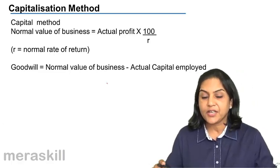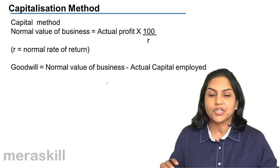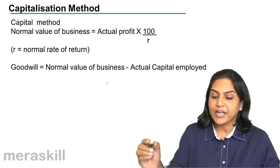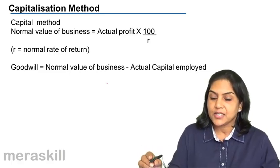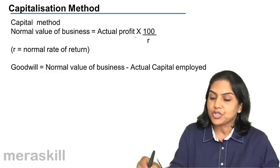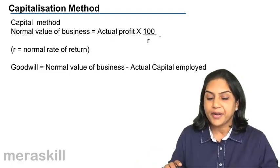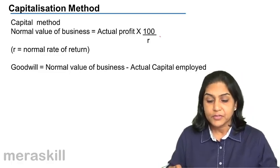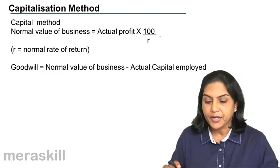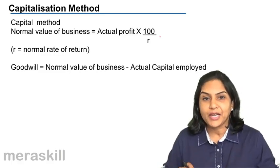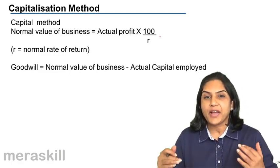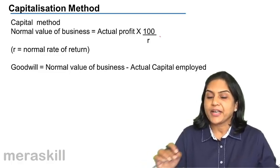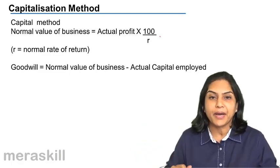Capitalization method. It is in a way a variation of the super profit method. The normal value of the business is assumed to be the actual profit multiplied by 100 divided by the normal rate of return. So we have a normal rate of return, and the actual profits we have made determine the value of the business — the capital employed should be actual profit into 100 by R.